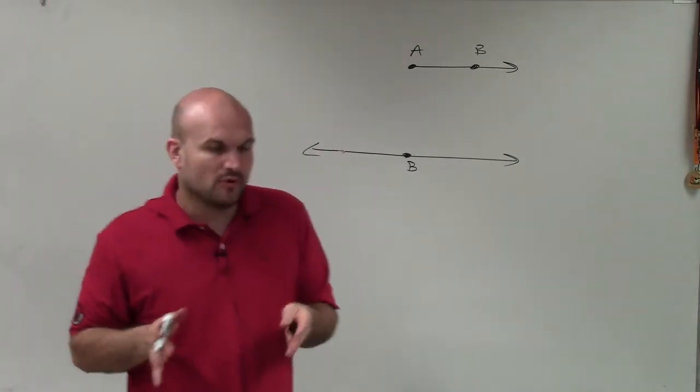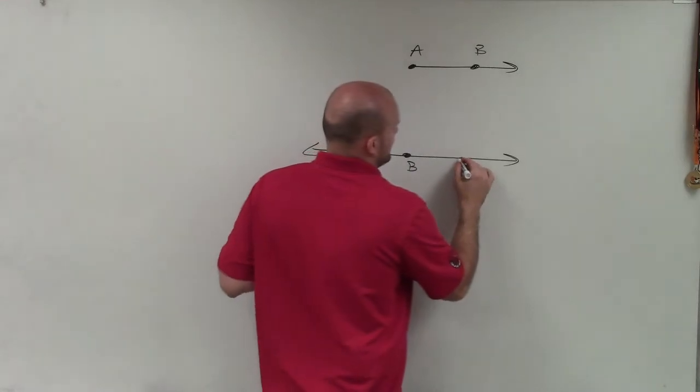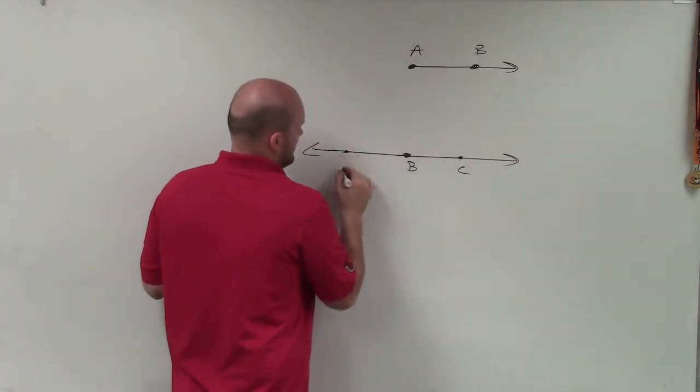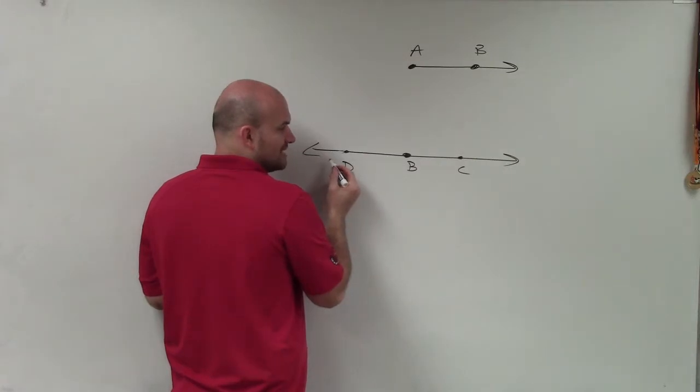And if we are able to, from that point B, create a ray in the opposite direction, so I can say BC and BD, now what we have done, we already know that these two rays are on a line, but they share a common endpoint.